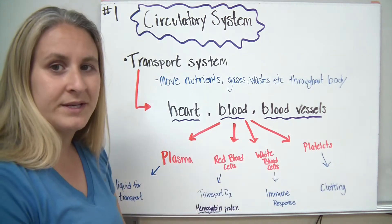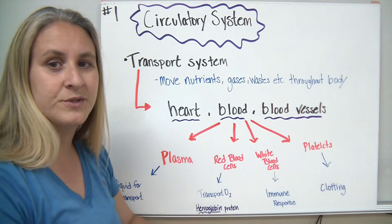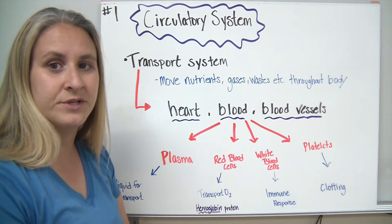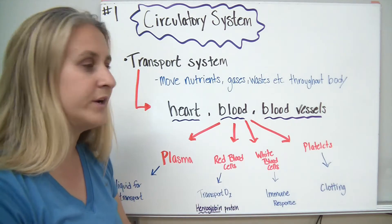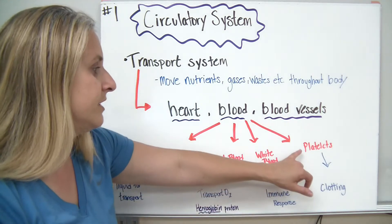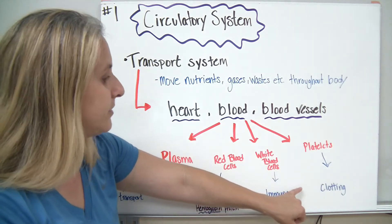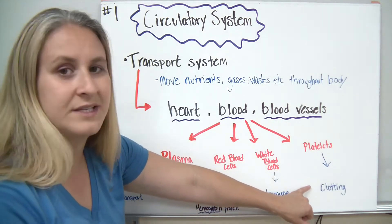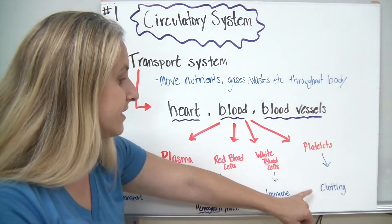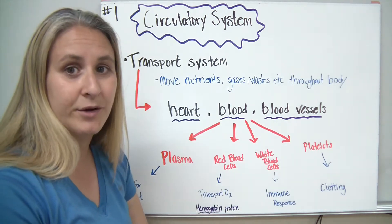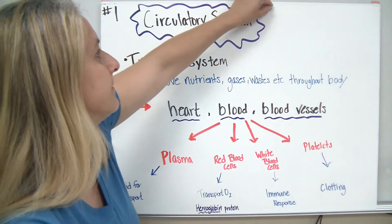Next are the white blood cells. White blood cells are used in what's called our immune response, which helps to protect us from foreign invaders. The last component is platelets. Platelets are actually cell parts — they're not whole cells — and they're involved in clotting our blood when we have some sort of an injury.